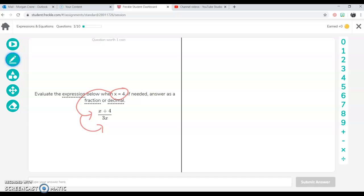So x plus 4 becomes 4 plus 4. And 3x, remember that means multiplying, becomes 3 times 4. So PEMDAS, we're going to solve the bottom first. 3 times 4 is 12. And then 4 plus 4 for the top is 8.